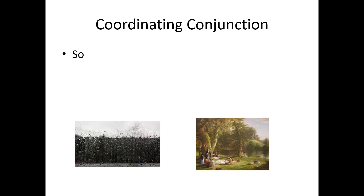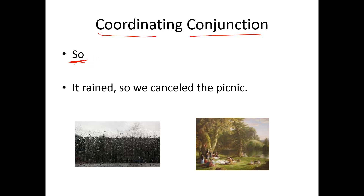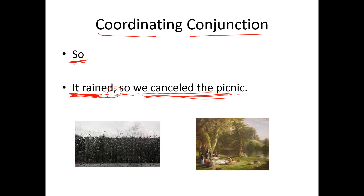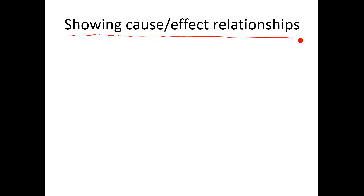The last way we can show a cause and effect relationship is with a coordinating conjunction, or a coordinator. The one we use is 'so.' It rained, so we canceled the picnic. We use 'so' to join two sentences. 'It rained' is a complete idea, 'we canceled the picnic' is a complete idea, and we combine those with 'so' and a comma, which goes before the word 'so.'